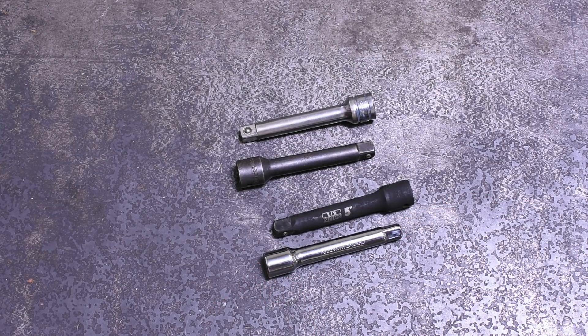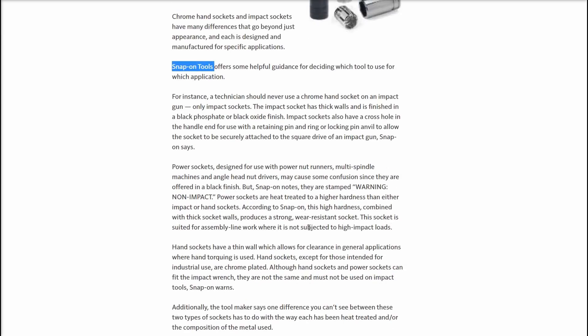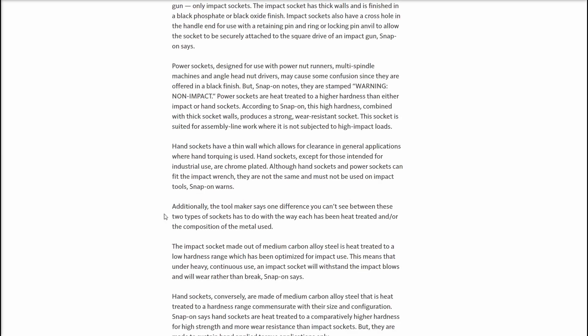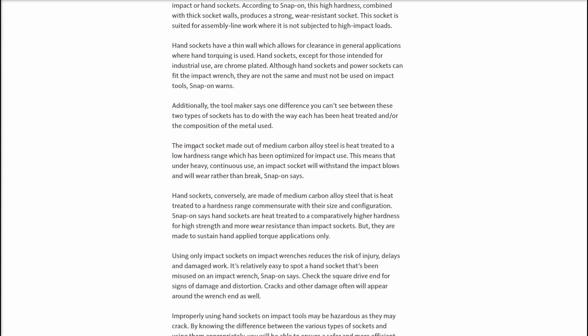The reason the two types of tools exist, chrome and impact, is suiting the needs of those two different uses, hand use and impact use. And according to Snap-on, impact tools are made of a medium carbon alloy steel with low hardness. This is so that they sort of absorb those impact blows and mar and gall rather than chip crack and break apart and blow up in your face.